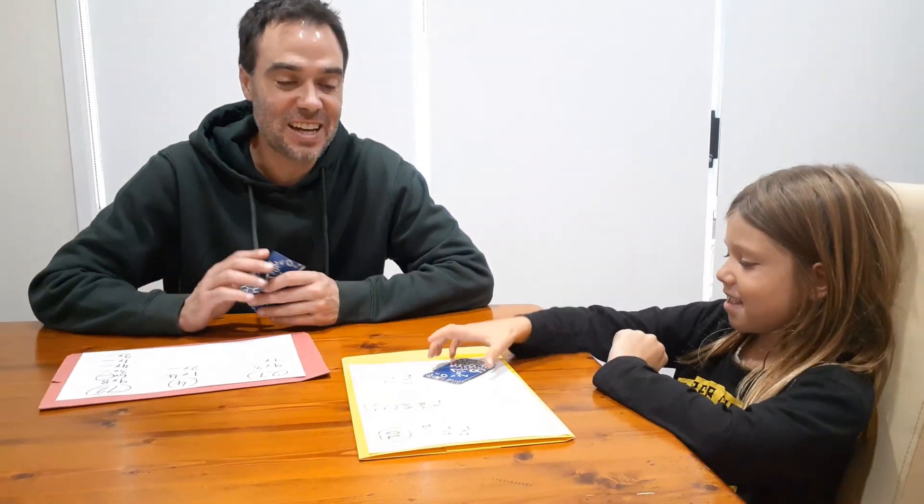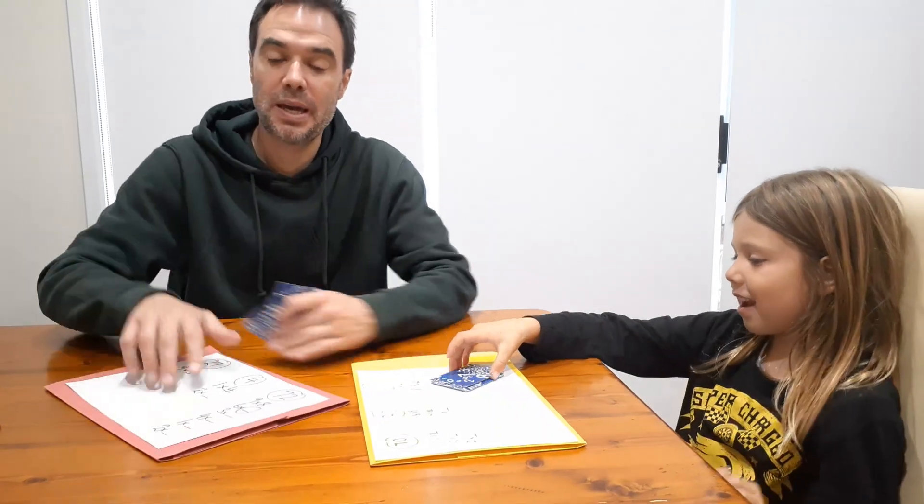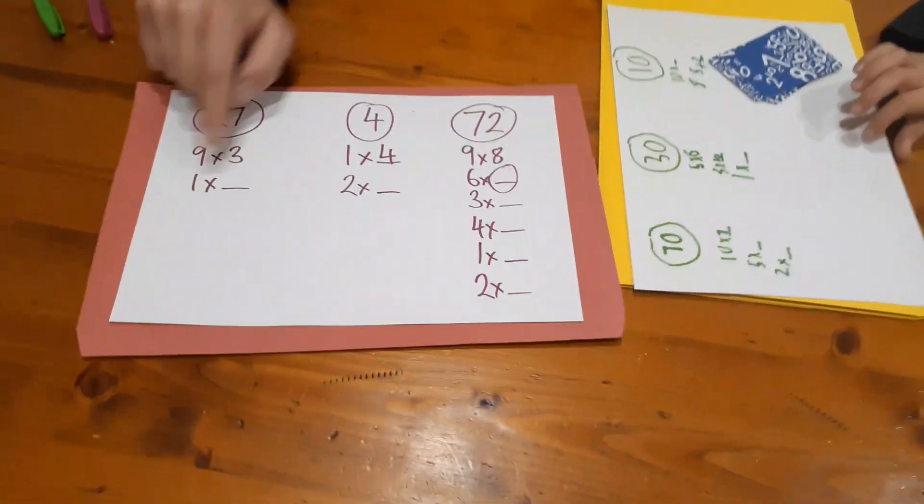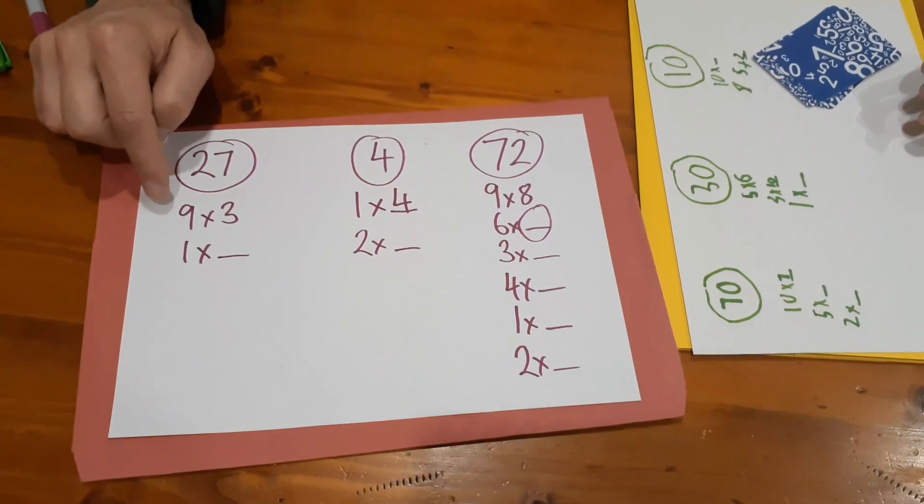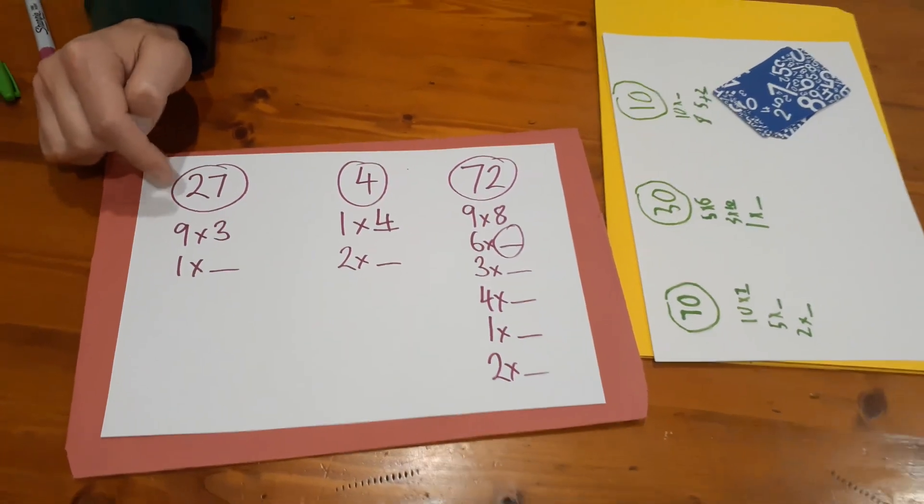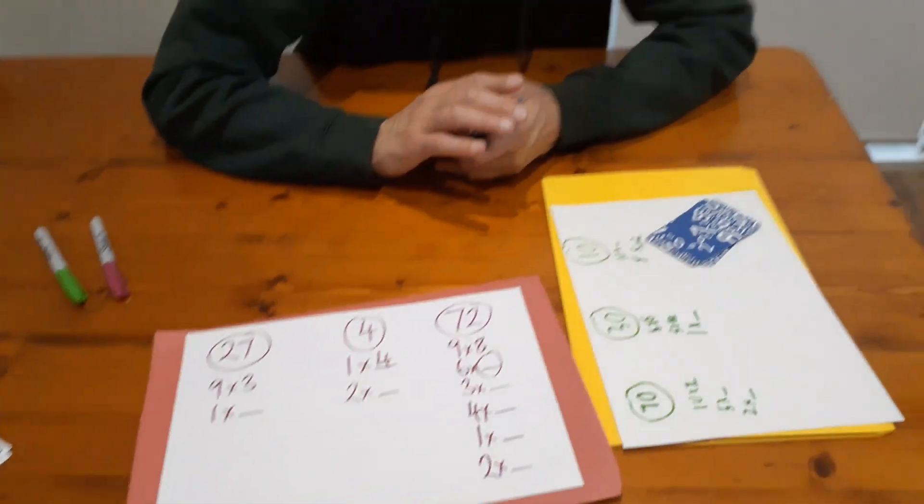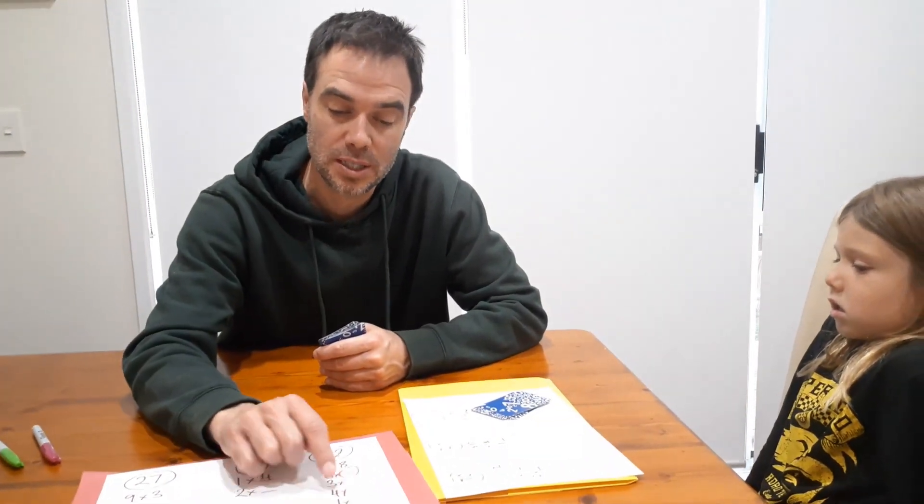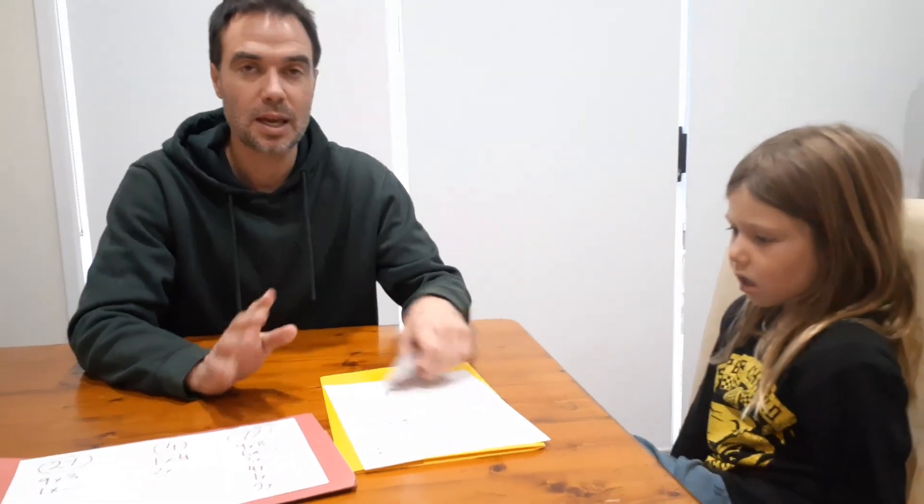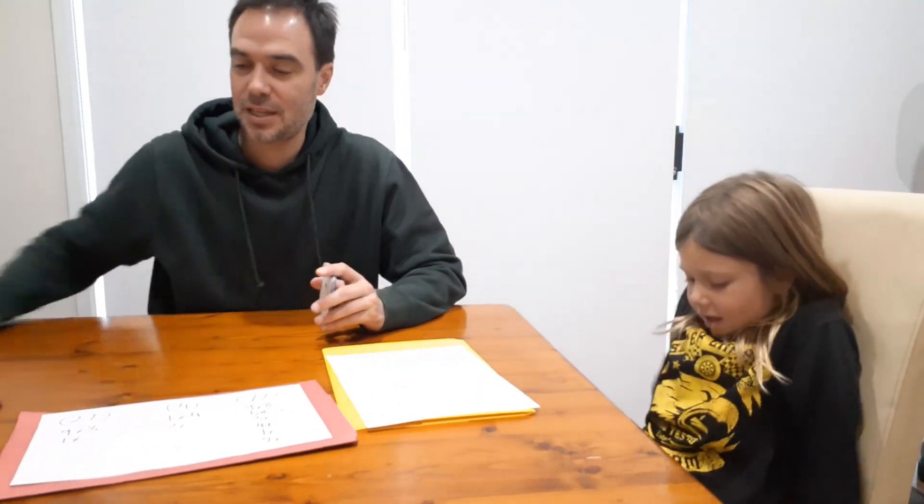So that is our Factor Flood. Now the piece of paper is really crucial because you need to keep recording your equations as you go. So that way you're not going to be doubling up in the equations. And a good question we didn't highlight there but a good question is to ask as you're going along. Like if you say four times something what would that something be? They don't have to know it but it's a good question to be asking. Okay. We hope you enjoy our Factor Flood. We'll see you next time. Bye. Bye.